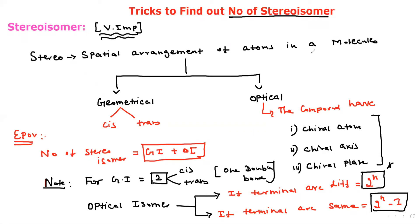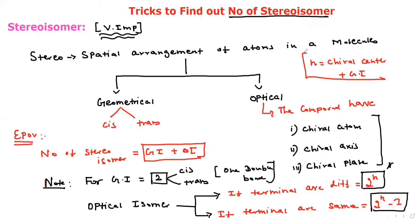What is n here? n is the number of chiral centers. So to summarize: stereoisomerism has two types — geometrical and optical. In geometrical isomerism, always two possibilities (cis and trans). For optical isomerism, if terminals are different apply 2^n; if terminals are same, apply 2^(n-1).